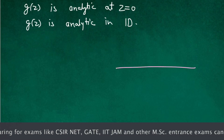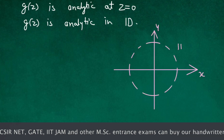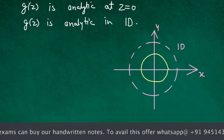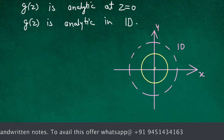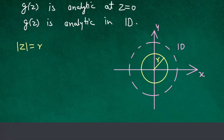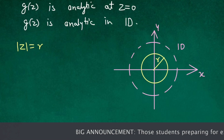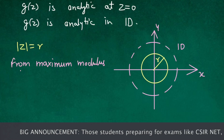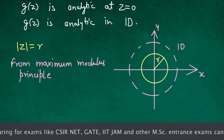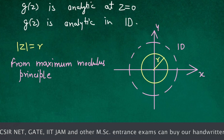We now have that g(z) is analytic in unit disk D. Let me draw the unit disk D and inside it a circle of radius r. In the circle |z| = r, the function g(z) is analytic. By the maximum modulus principle, the maximum of |g(z)| lies on the boundary of this circle, i.e., on |z| = r.